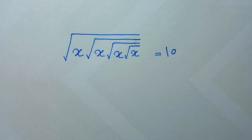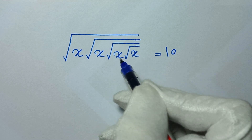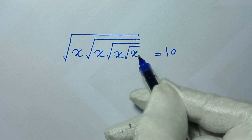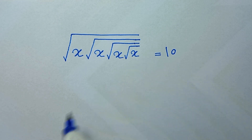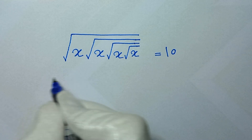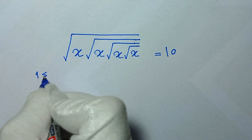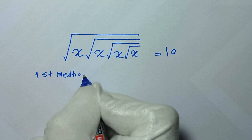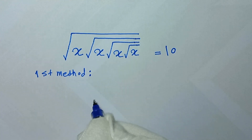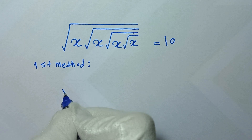Hello my friends, you're welcome. We solve this problem: square root of x times square root of square root of x times square root of square root of square root of x times square root of square root of square root of square root of x equals 10, to find the value of x. We solve this problem with two methods.